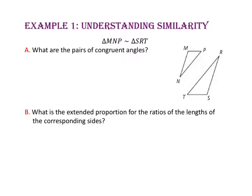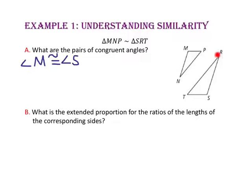In example 1, we will understand similarity. Triangle MNP is similar to triangle SRT. What are the pairs of congruent angles? Remember that in similar polygons, all corresponding angles are congruent. Angle M is the first angle in the name, and angle S is the first angle in the name of the second triangle, so angle M is congruent to angle S. Since N is the second letter in the first triangle and R is the second letter in the second triangle, angle N is congruent to angle R. And finally, since P and T are the last letters in each triangle name, angle P is congruent to angle T.